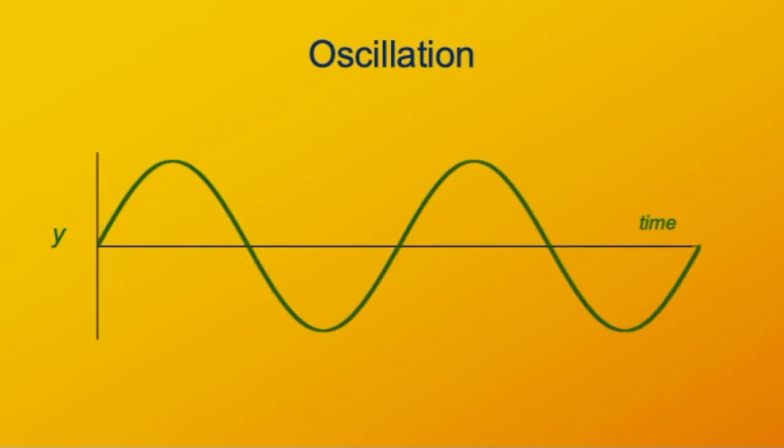And what you get is this sinusoidal type curve. This is exactly the same kind of mathematical curve that you get if you plot uniform circular motion projected onto one axis. The correspondence between uniform circular motion and vibrations is actually quite deep.